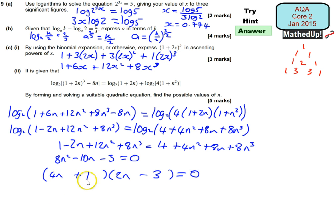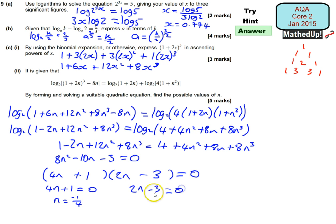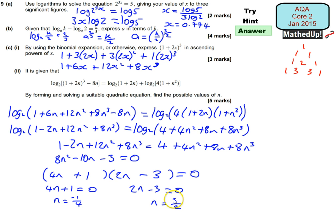Therefore, 4n + 1 = 0 gives n = −1/4, or 2n − 3 = 0 gives n = 3/2. Those are our possible values of n. Thanks very much for joining me, I hope that was useful, and I'll see you next time.